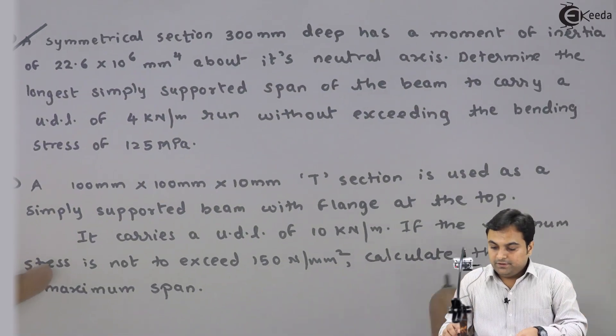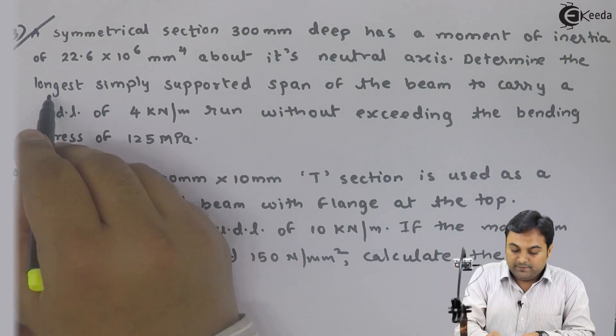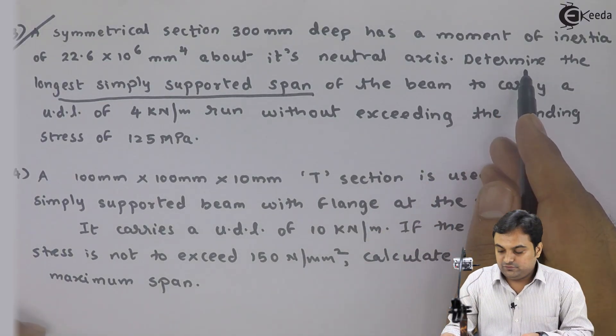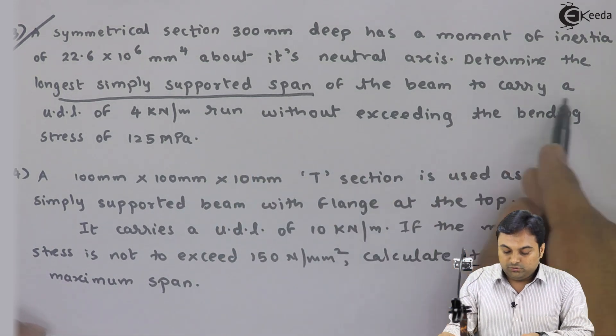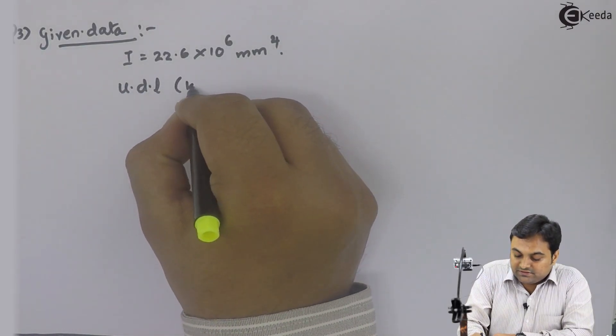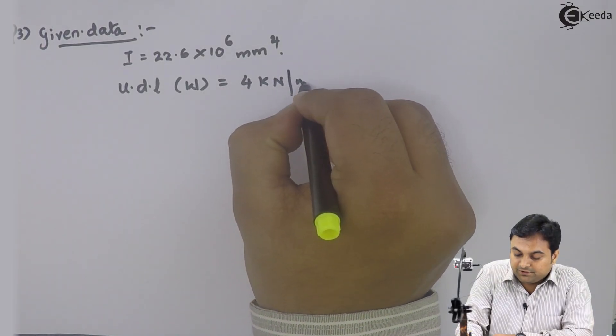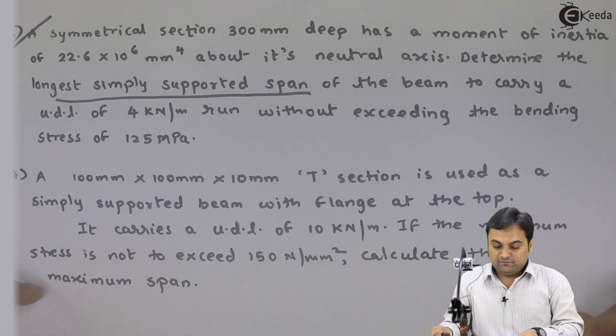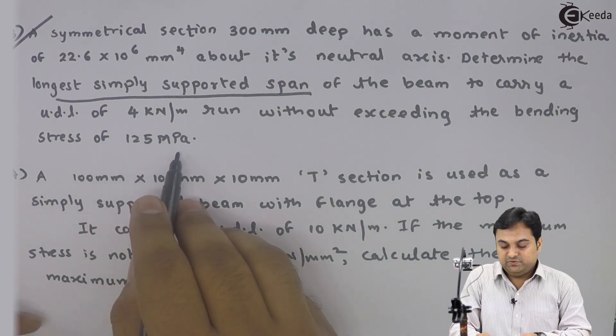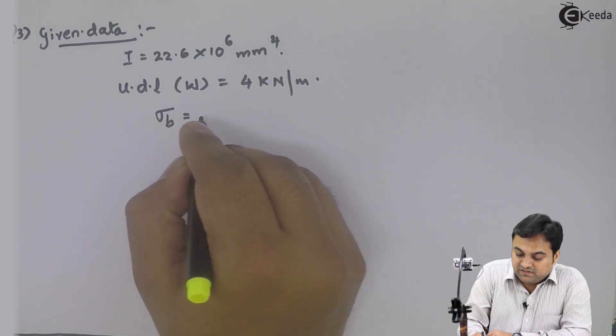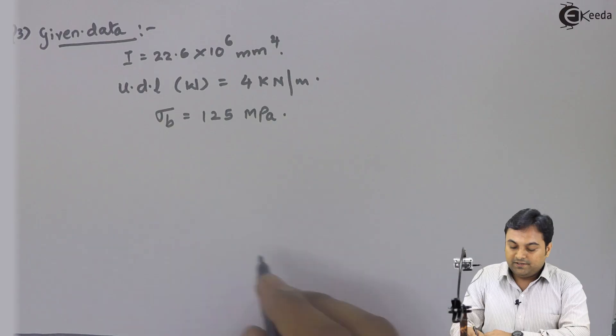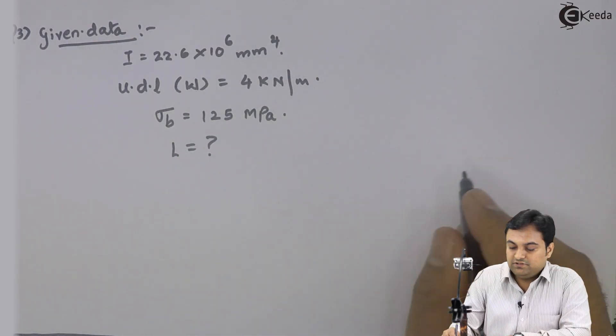Next, determine the longest simply supported span. See here, longest simply supported span ka matlab length, the length of the beam. So the question is that you all have to determine the length of the beam to carry a UDL of 4 kN per meter. The length of the simply supported beam.